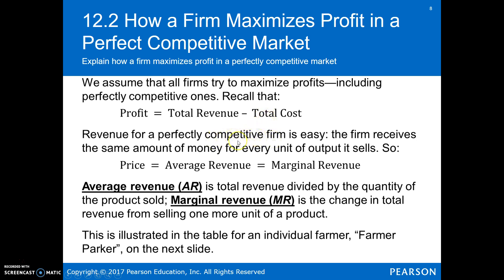Revenue for a competitive firm is straightforward — total revenue is just P times Q, and the firm receives the same amount of money for every unit of output it sells. That will be different as we look at monopoly and monopolistic competition. But in this case, because the individual demand curve for the firm is horizontal, it's always the same price times whatever the quantity is. So that rectangle under the individual demand curve is just total revenue for the firm. In perfect competition, price equals average revenue equals marginal revenue. Average revenue is total revenue divided by quantity sold. Marginal revenue is the change in total revenue from selling one more unit.